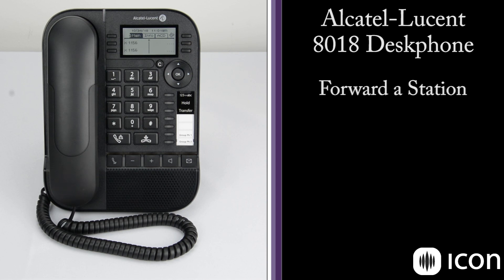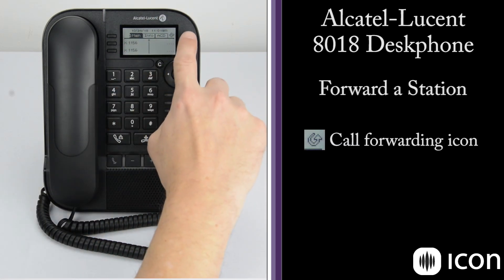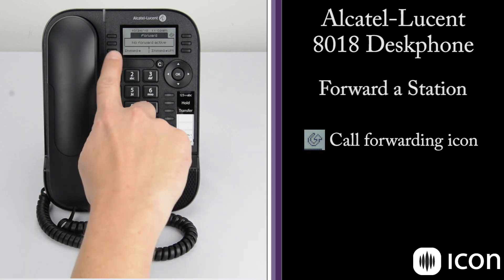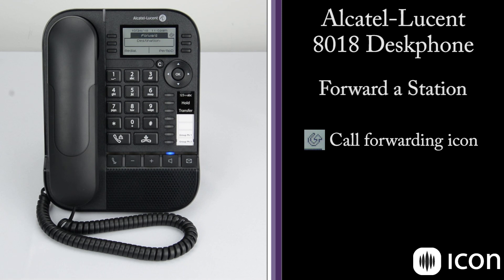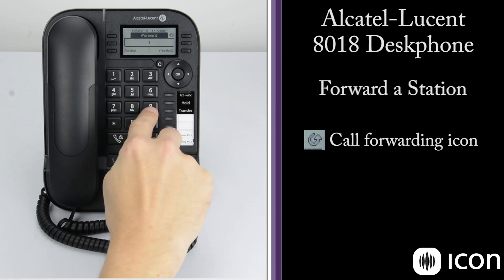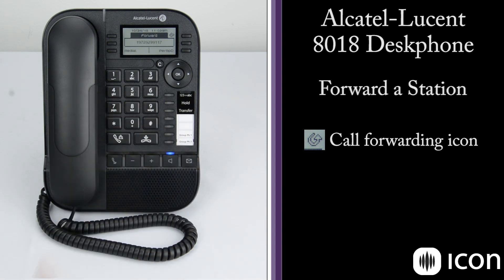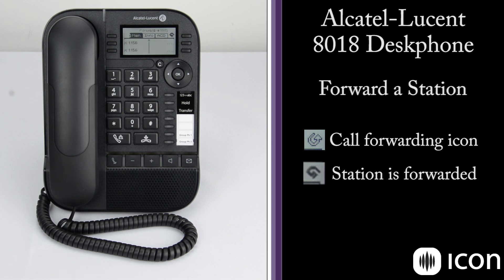To forward a station, select the forwarding key in the top right-hand corner of the display — right now it's inactive. Selecting it takes us to the forwarding screen. To immediately forward incoming callers to another number, I select the IMMED key, enter the number I'd like to forward calls to, and hit OK. Forwarding has been accepted.